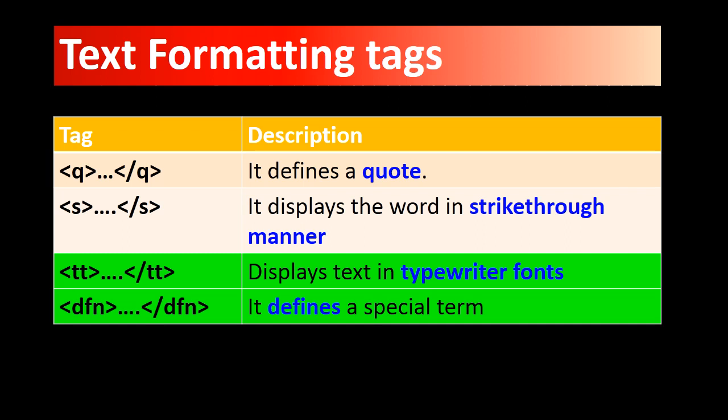The tt tag is used to display the font in typewriter font. We are familiar with fonts such as Arial and Times New Roman. In olden days, before the invention of computers, typewriters were used. If you want to display any content of your web page in typewriter font, you use the tt tag. The next tag is dfn — it is used to define a specific term. This is not of much use. I will demonstrate the usage of both tags.